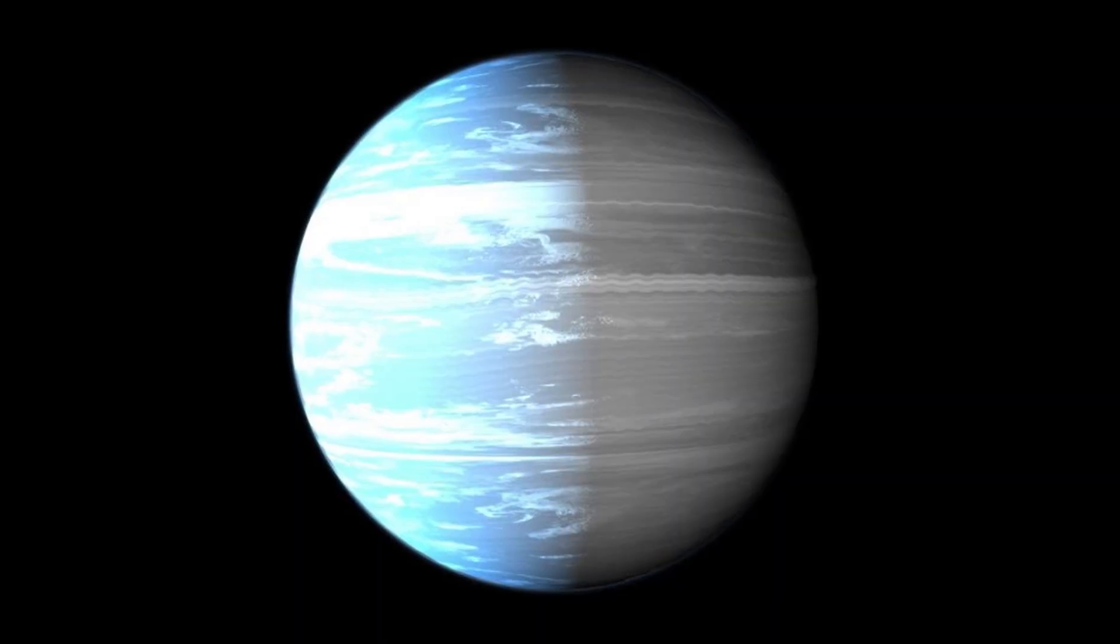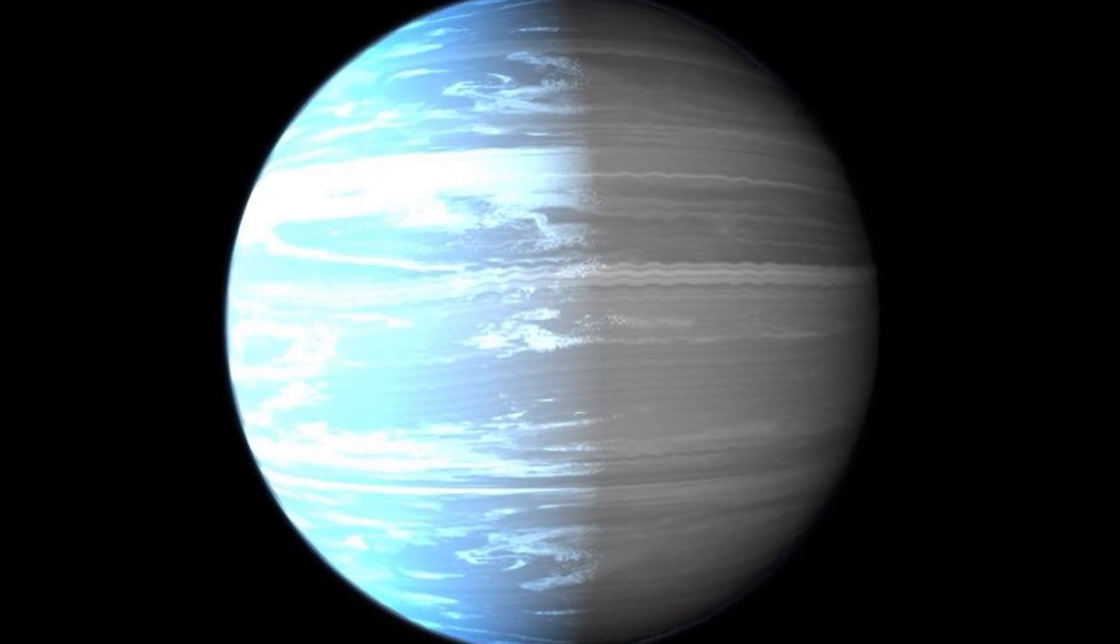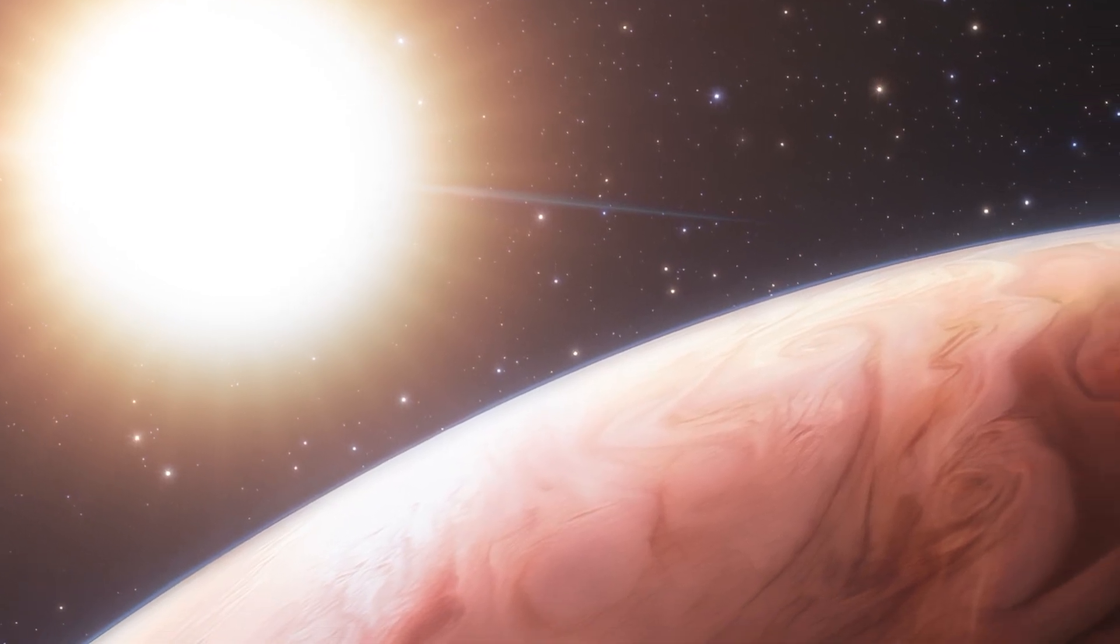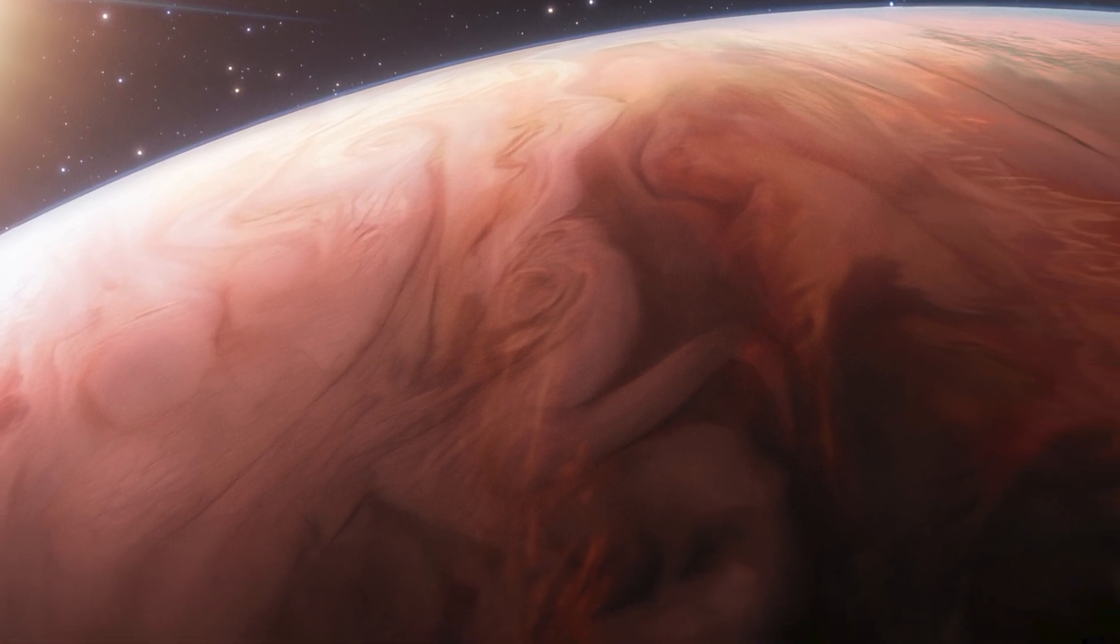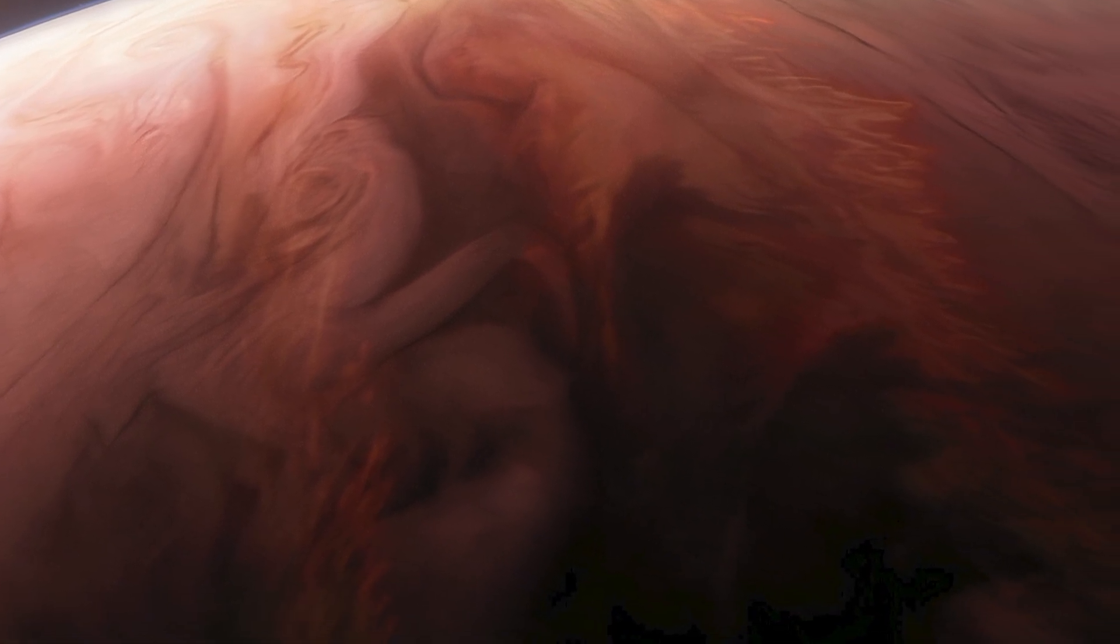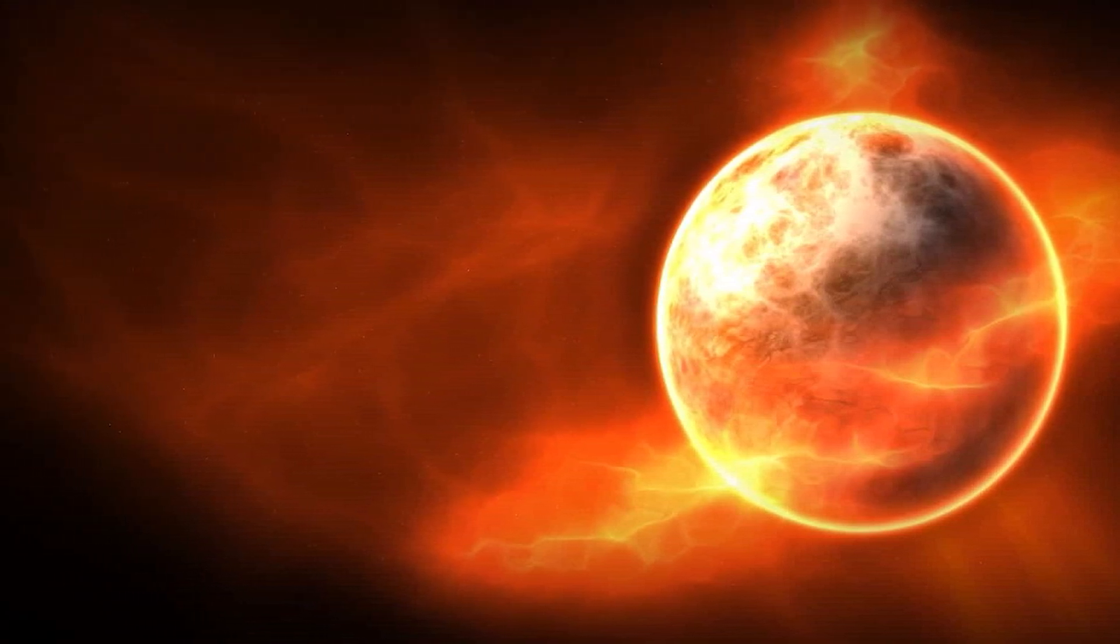Imagine a place really far away, about 640 light-years from Earth. There's this super-hot planet called WASP-76b that's as big as Jupiter. But here's what's weird. This planet doesn't spin, so one side always faces its star, while the other side is always dark.